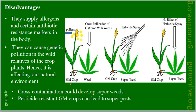Pesticide resistant GM crops can lead to super pests. The pollen of GM crops, because of cross-pollination with weeds, can produce super weeds. When we spray herbicide, these super weeds do not show any effect.